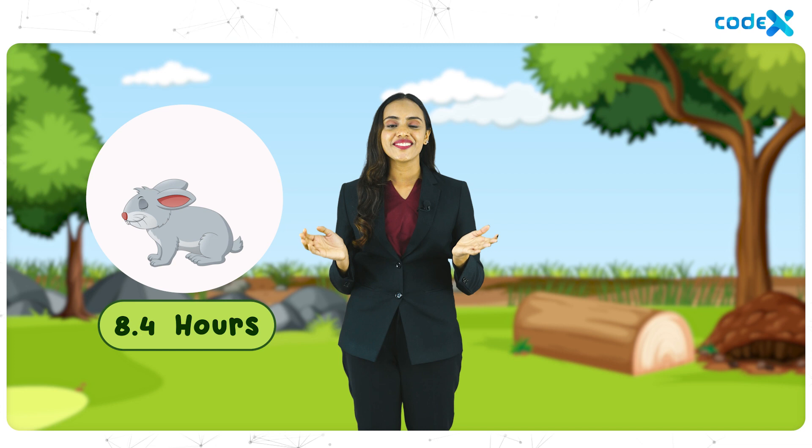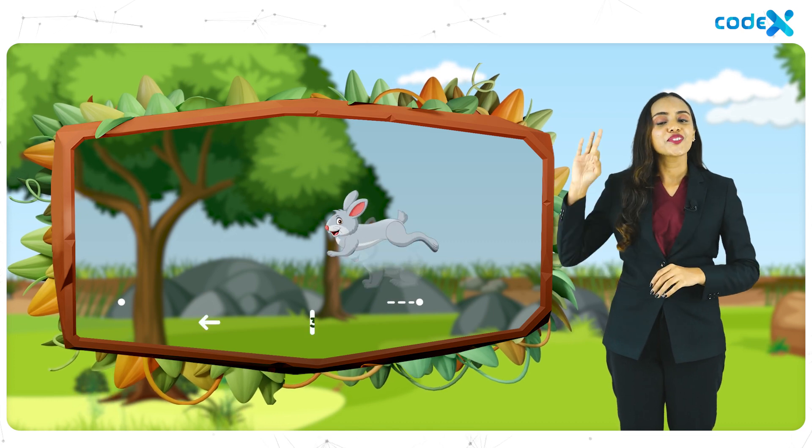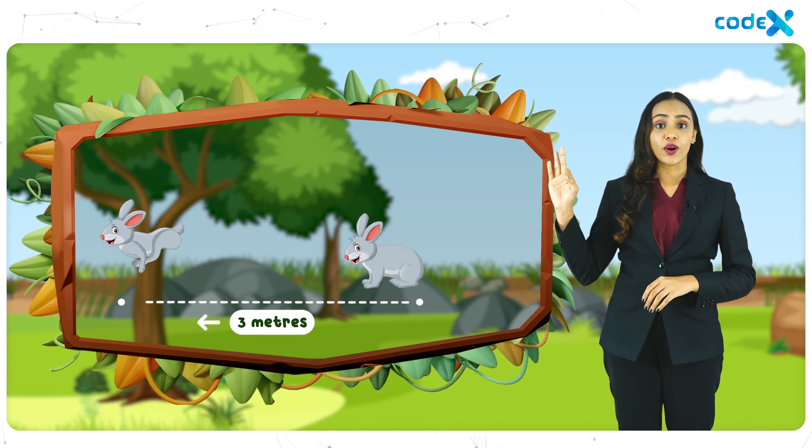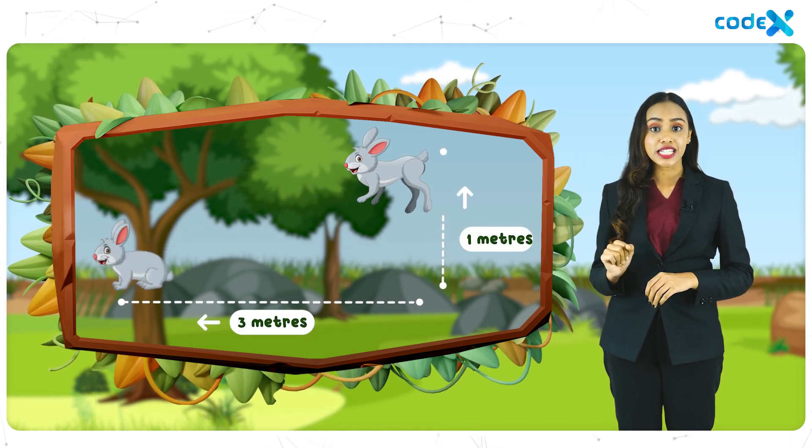Did you know rabbits can sleep for an average of 8.4 hours? Well, they can. Since the name of our game is the jumping rabbit, can you guess how far or how high a rabbit can jump? A rabbit can jump up to 3 meters long and 1 meter high.